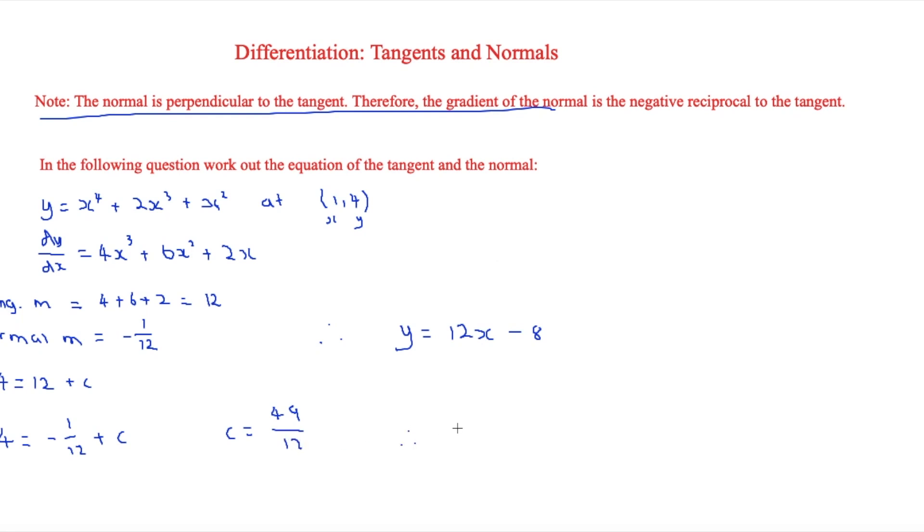So therefore, our final answer for that is going to be y equals minus 1/12x plus 49 over 12.